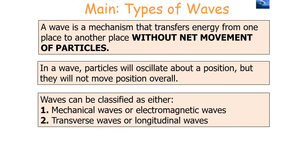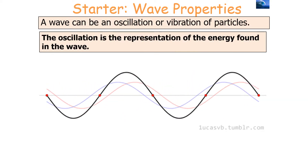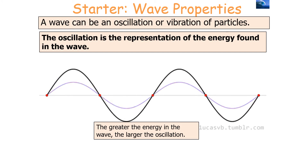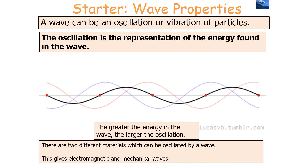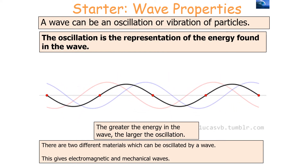To summarise what we've learned so far: a wave is a mechanism that transfers energy from one place to another without the net movement of particles. In a wave, particles will oscillate about a position but will not move overall. Waves can be classified as either mechanical or electromagnetic waves, or as transverse or longitudinal waves. A wave is an oscillation or vibration of particles, with the oscillation representing the energy in the wave — the greater the energy, the larger the oscillation.